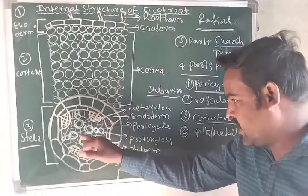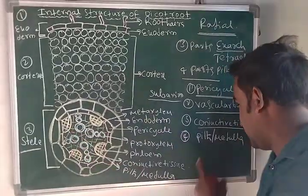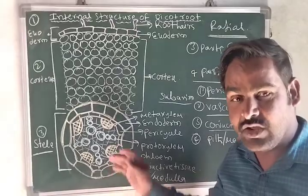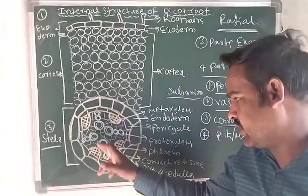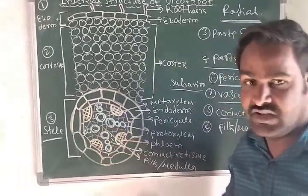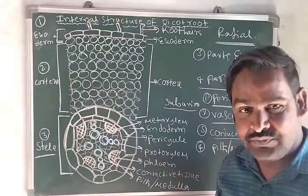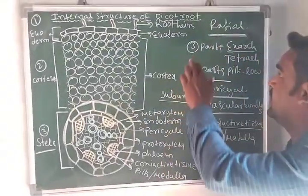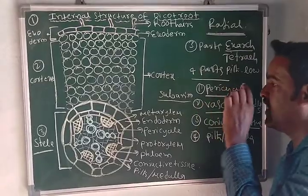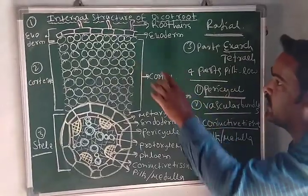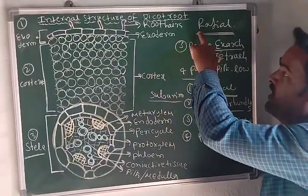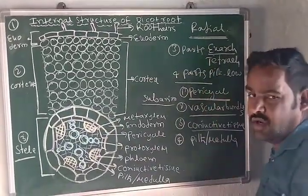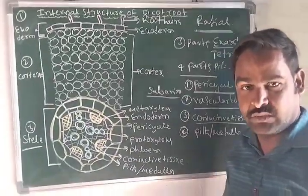The inner portion of the stele is called pith or medulla. It also contains parenchyma cells that help in storage of food materials. So the main identification characters of the dicot root internally are: radial type of vascular bundle, exarch, tetrarch, and pith is very small.